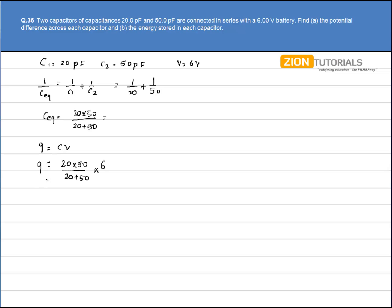Now if this is the charge on each capacitor, then using the formula Q equals CV with the same charge and capacitance of each capacitor, we have Q as 20 into 50 divided by 20 plus 50 into 6. This is the value of the charge.